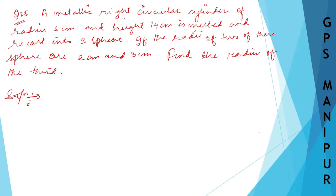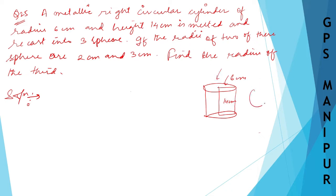There is a metallic right circular cylinder of radius 6 cm and height 14 cm. It is melted and recast into 3 spheres. The radius of the first sphere is 2 cm, the radius of the second sphere is 3 cm, and the radius of the third sphere we need to find out.